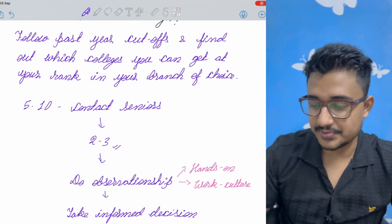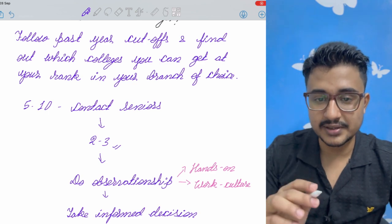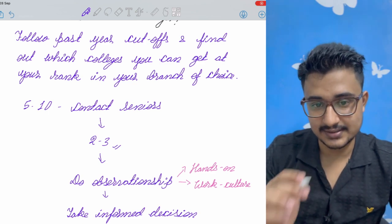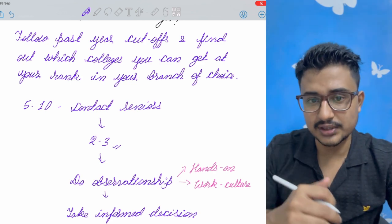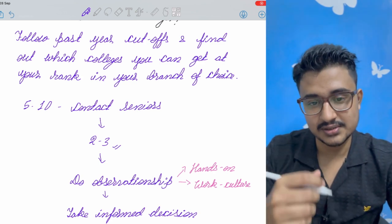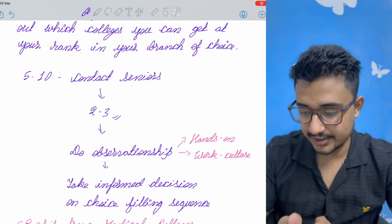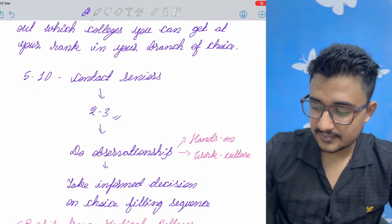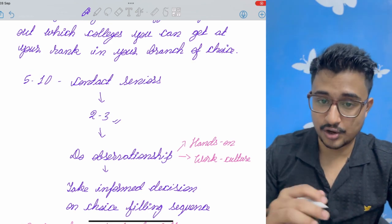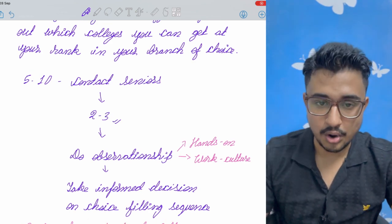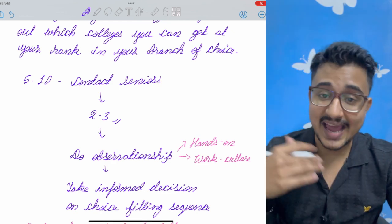You go and do an observation ship. It is very much necessary to know how much hands-on you are getting there and what is the work culture. Because in DNB, the workload is a little bit less, but in few institutes, the workload is also very much high and how is the work culture you get to know about it. And then you take an informed decision and fill your choices accordingly. So, observation ship is very much necessary before choosing an institute.